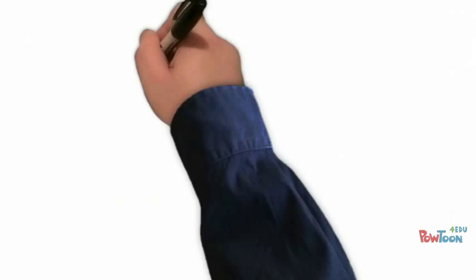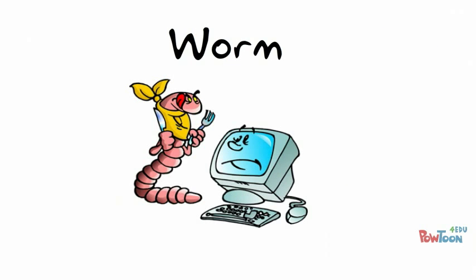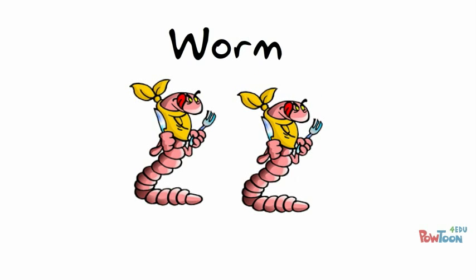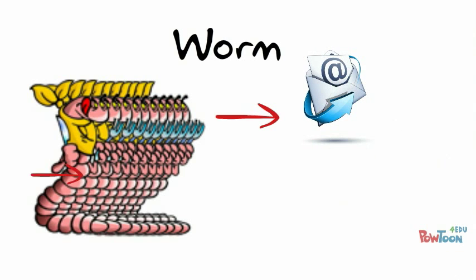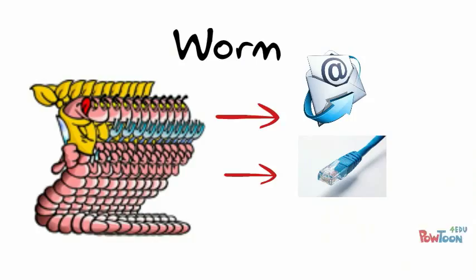Whereas a virus needs human help to spread, such as the sending of emails with infected attachments, a worm — which is very similar to a virus — does not need any help from us. A worm has the ability to copy itself, or replicate, often thousands of times, and therefore send itself out to thousands of computers, either by email, along network cables, or wirelessly.